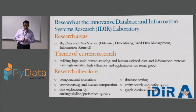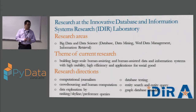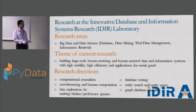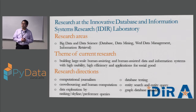At UT Arlington, my research focuses on several areas related to big data and data science. That includes databases, data mining, information retrieval, and web data management. The theme of our research is on building human-assisting and human-assisted large-scale data and information systems with high usability, high efficiency, and applications for social good. Today I'm going to mainly talk about one of these projects: Computational Journalism and Data Science Applications in Computational Journalism.